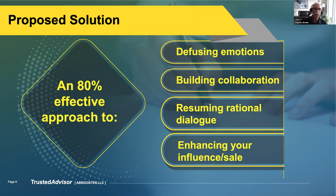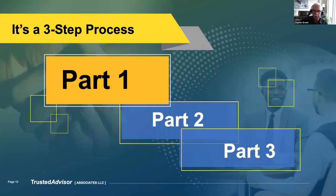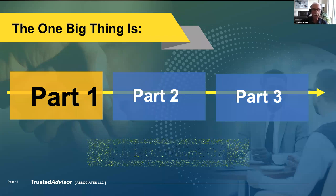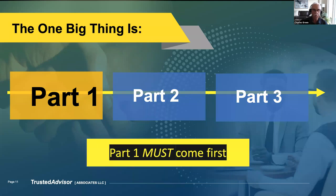Here's basically the idea: you start out by diffusing emotions, you build collaboration, that allows you to resume a rational dialogue, and the end result is that you enhance your ability to influence and get the sale. It's a three-step process. The big lesson is that part one has to come first — that's the one absolute. If you skimp on part one, parts two and three are not going to work.